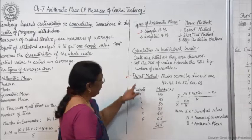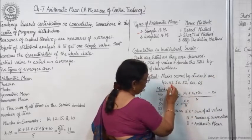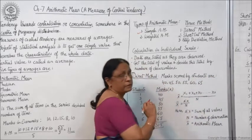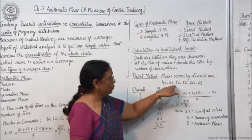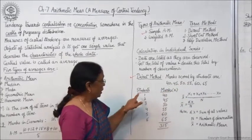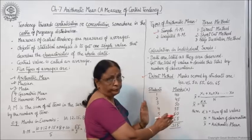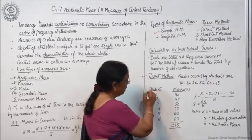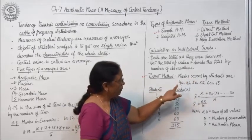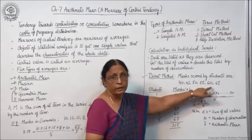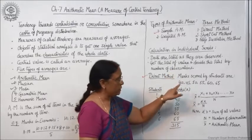In the direct method, suppose marks scored by students are 40, 45, 50, 55, 60 and 65. This example is taken to illustrate the method of calculation — these are marks scored by 6 students. To calculate arithmetic mean by direct method, you make two columns: one for number of students and one for marks. Since this is individual series, marks are given, so copy down the marks and name this column X.